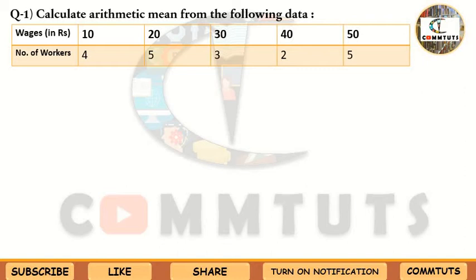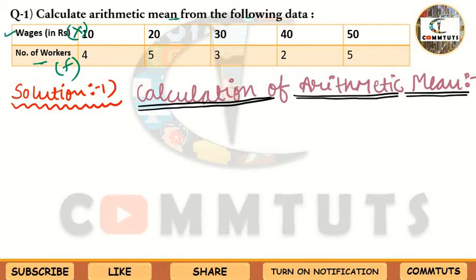Question 1: Calculate the arithmetic mean from the following data. You are given wages in rupees and number of workers. Here wages is your X (items in the series) and number of workers is your frequency F. Let's now calculate the arithmetic mean. The way I show you the solution here is exactly how you must solve it in your exams.